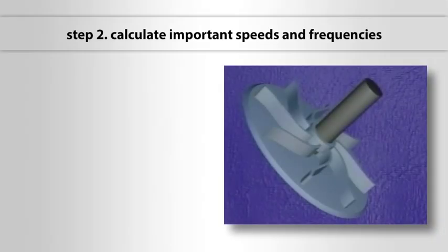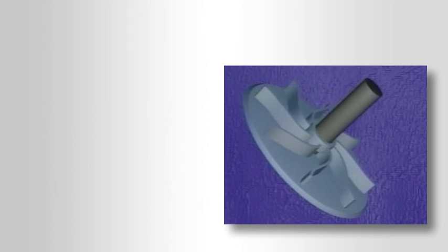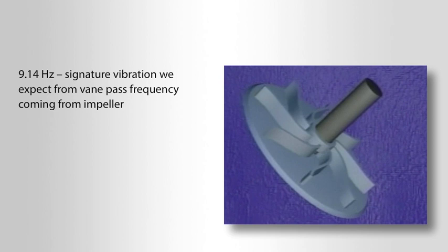Step 2: Calculate important speeds and frequencies. The one-times turning speed of the shaft is always the first speed you'll want to determine. In this case, the shaft is turning at 9.14 Hz.